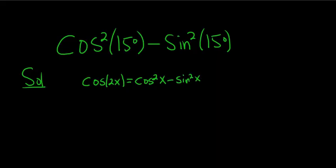So all we have to do is replace all of the x's with 15 degrees. So we'll start by writing down the original question, which was cosine squared of 15 degrees minus sine squared of 15 degrees.